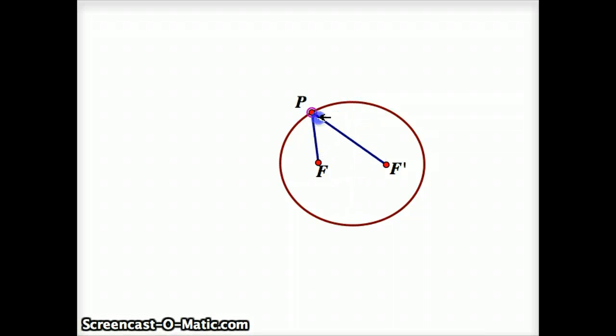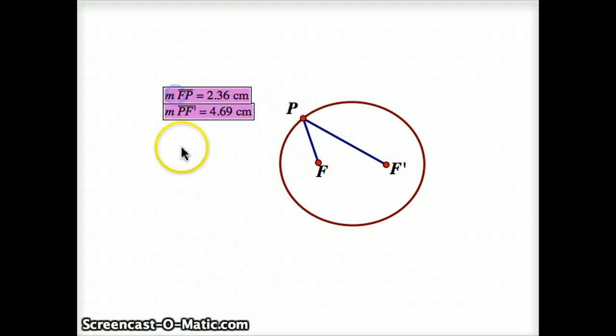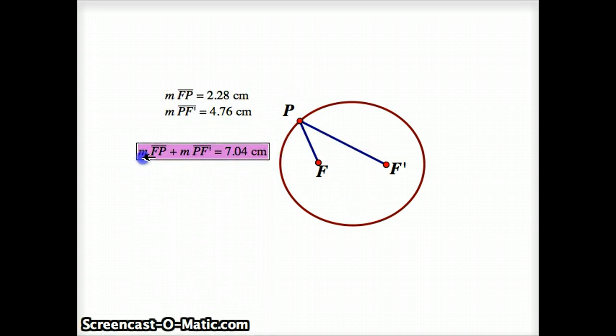One thing about this point P, that every point P on the ellipse would have in common, is if I measure the distance, in this case from F to P, is 2.36 centimeters, and from F prime to P, is 4.69 centimeters. If I move point P around, those numbers change. But what doesn't change is when I add together those two numbers, what happens is that I get, in this case, 7.04 inches.